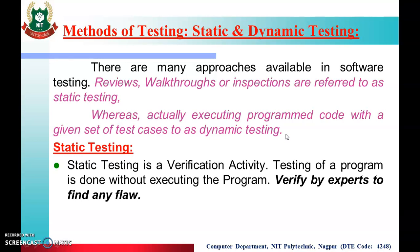Now we will learn each one step by step in detail. First one is static testing. Static testing is a verification activity. Because we have read in the previous lecture about the V&V model — verification and validation. Verification means when we create the software, when we perform the testing, we call it static testing. So static testing is a verification activity. When we are in the verification phase, we will perform static testing, because we cannot execute the program.